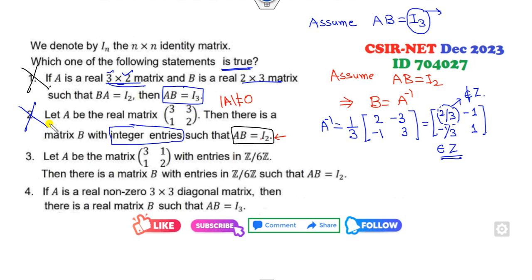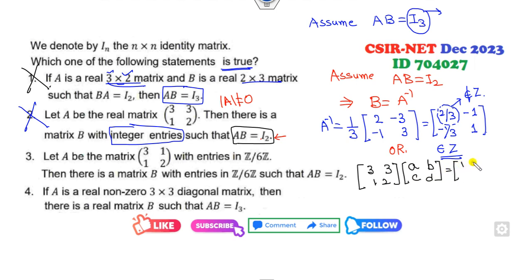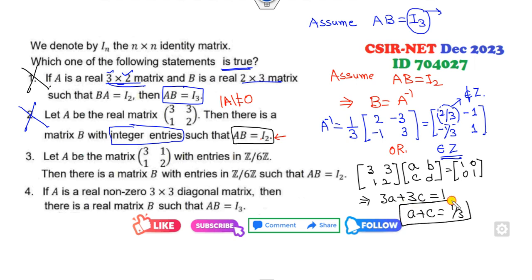One more method students often use in examinations: assume A × [[a,b],[c,d]] = I. Then 3a + 3c = 1, so a + c = 1/3. Can you find integers a and c such that a + c = 1/3? That is not possible. So option B is also cancelled.